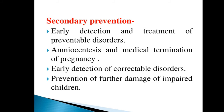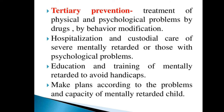Early detection of correctable disorders — if there is a disorder that can be corrected, you also have to do early detection and prevent it. Prevention of further damage in impaired children is also important. Then comes tertiary prevention. In tertiary prevention, you treat physical and physiological problems by use of drugs and behavior modification — you provide medication to the patient and modify their behavior.